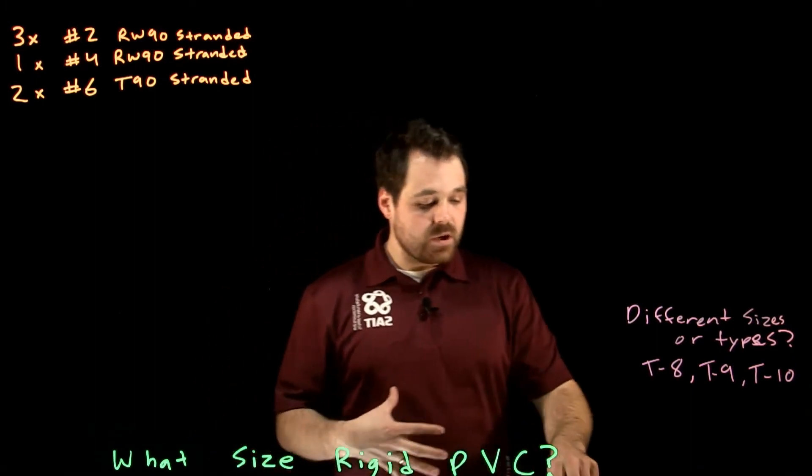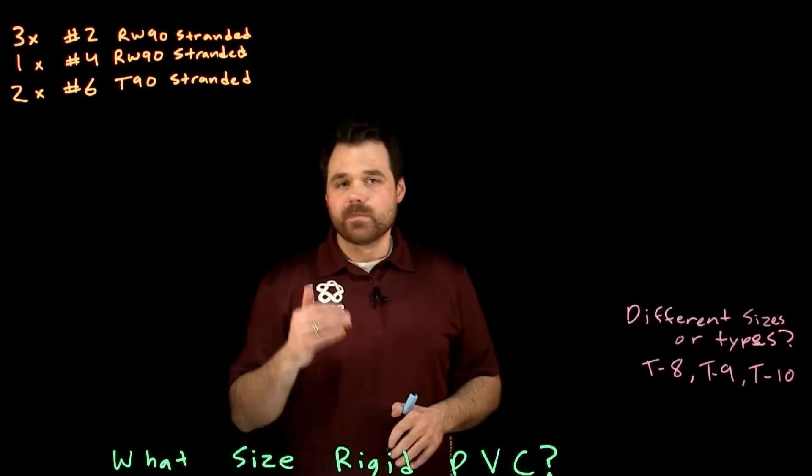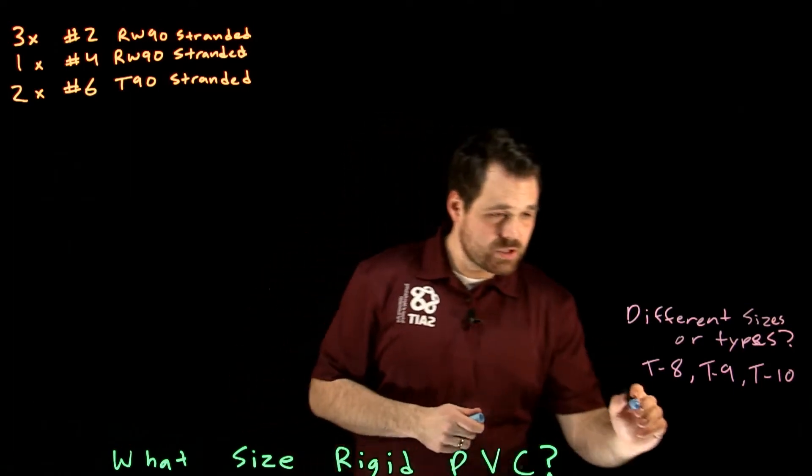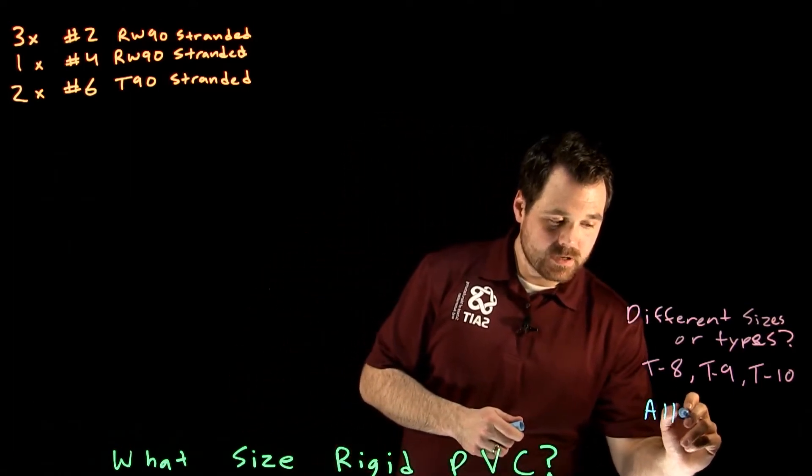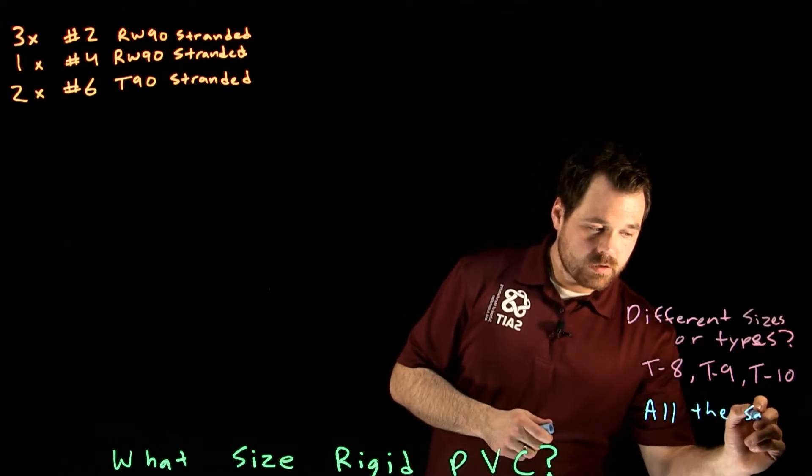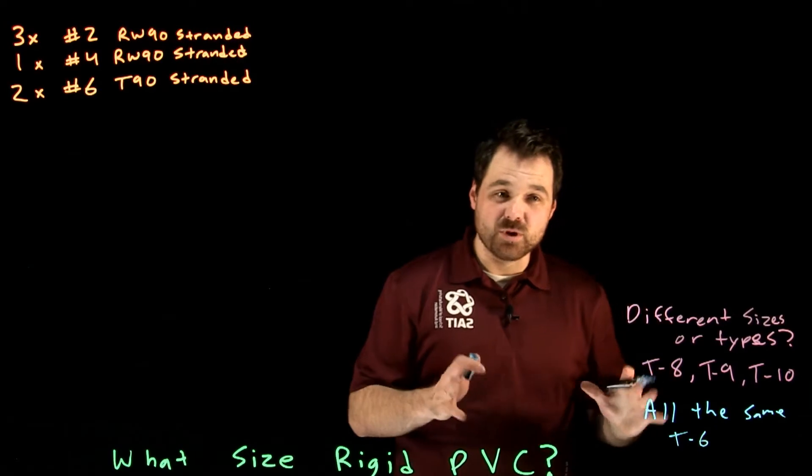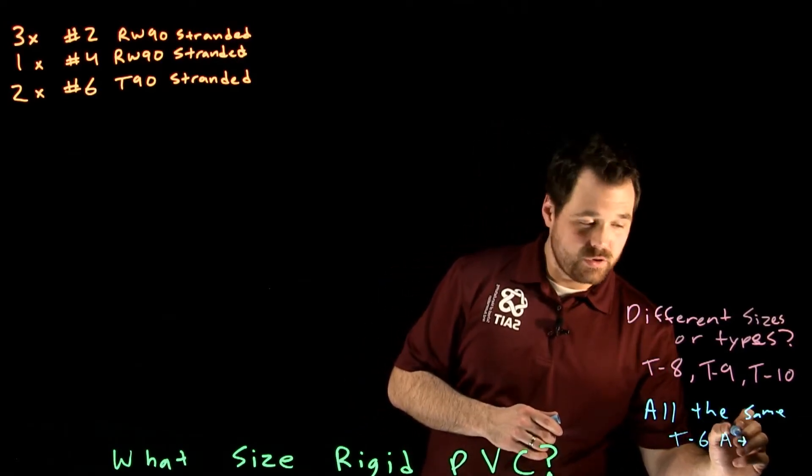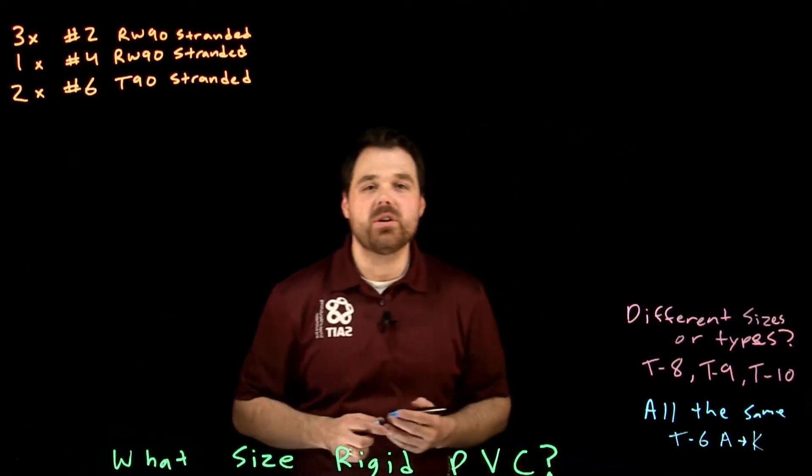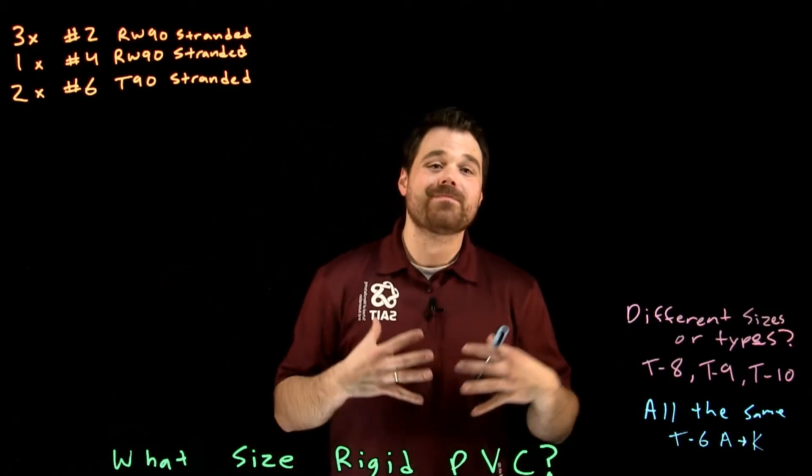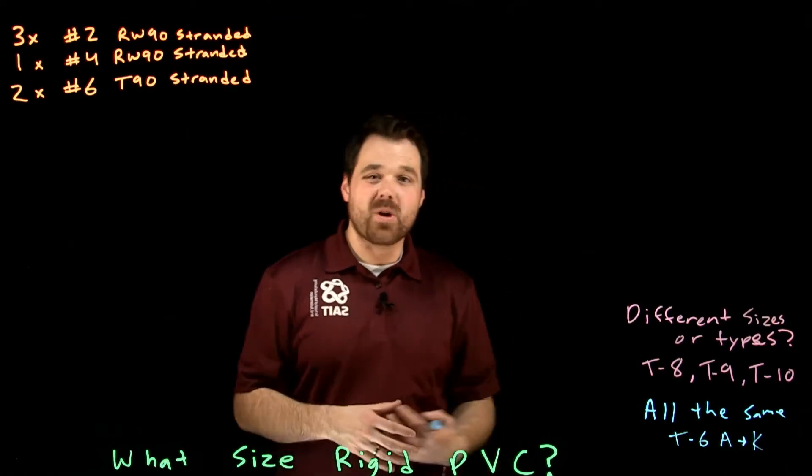However, if you are working and you have all the same types of conductor, like let's say all RW90, all number six, we can actually use table six. And table six actually goes from A all the way through to K based on the different conduit type. A little bit quicker, table six, but eight, nine, ten is going to be a lot more accurate.